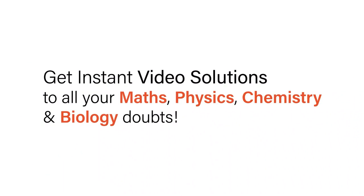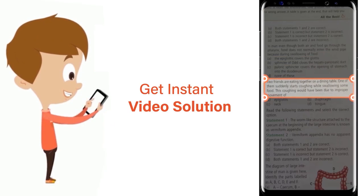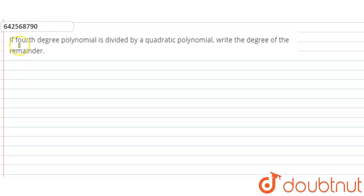With Doubtnet, get instant video solutions to all your math, physics, chemistry, and biology doubts. Just click the image of the question, crop the question, and get instant video solution. Download Doubtnet app today. It is given that if a fourth degree polynomial is divided by a quadratic polynomial, write the degree of the remainder.